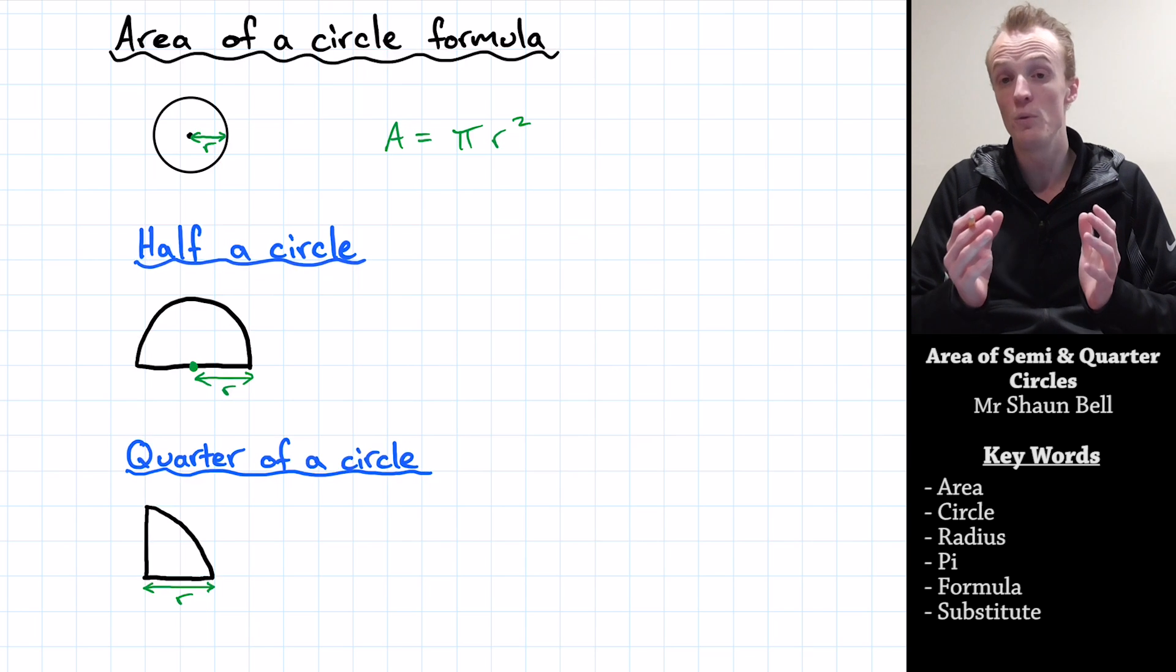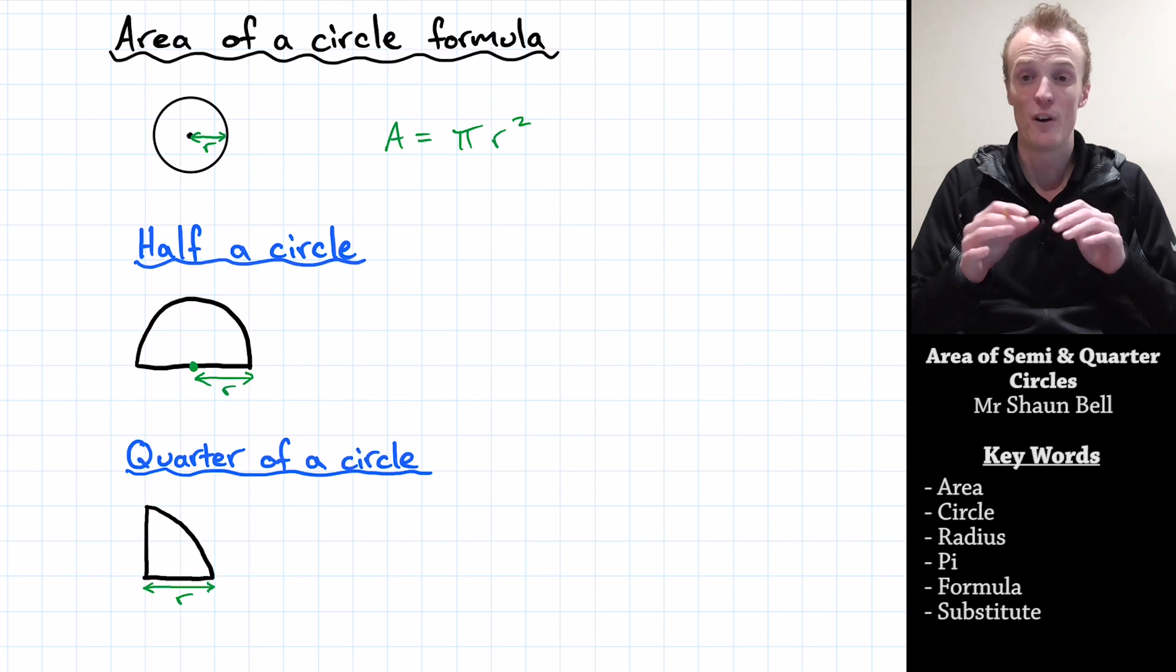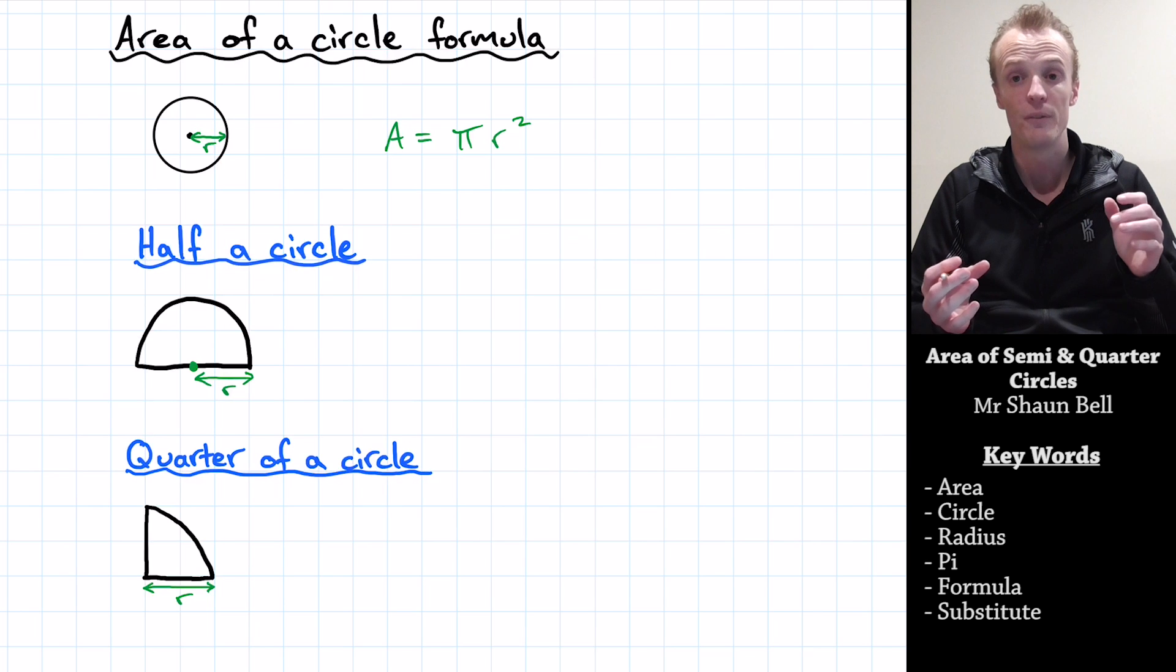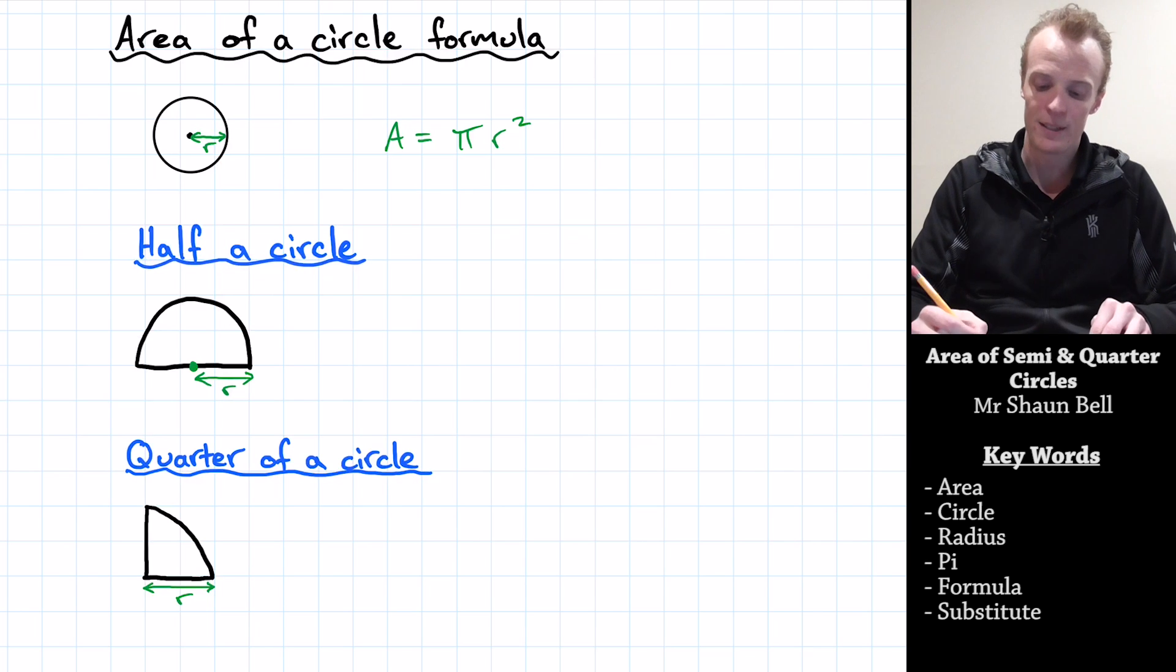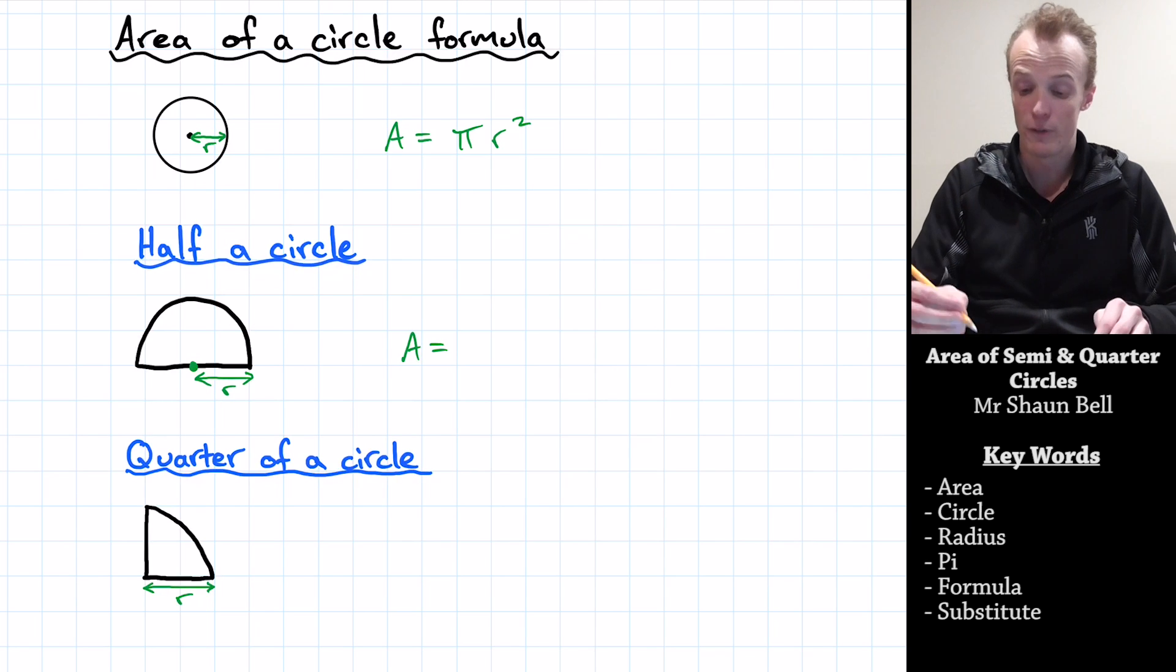Well, we could take the area of a full circle and then divide that into two halves, which is the same as dividing it by two. So the area of half a circle is the area of a full circle, which is pi r squared, divided by two.